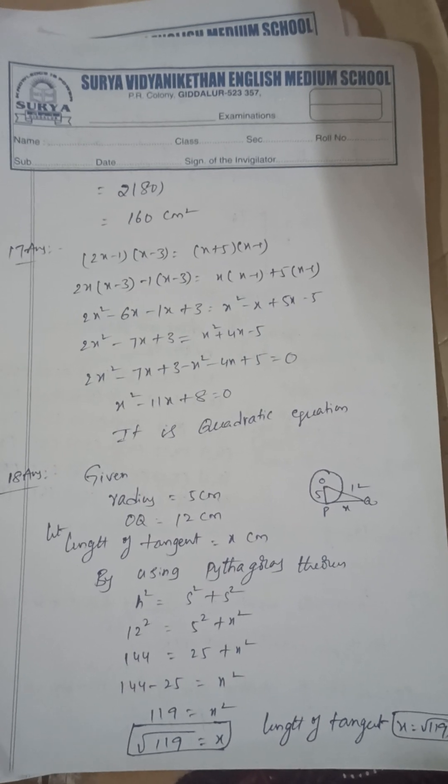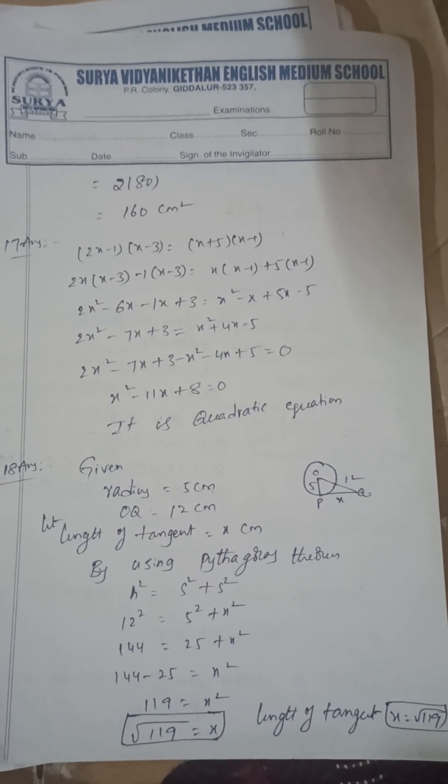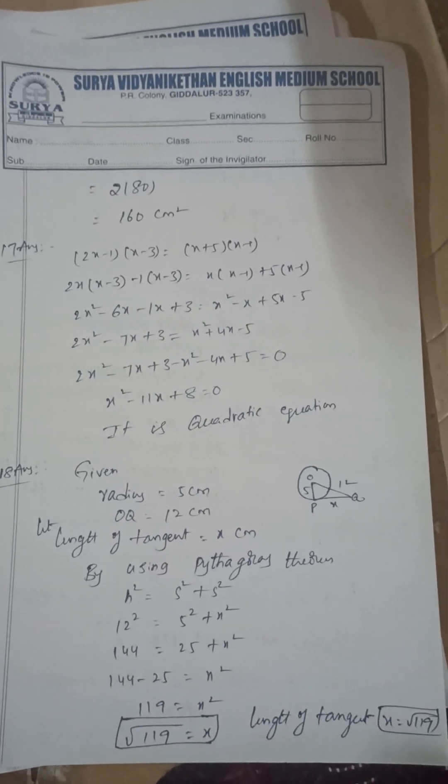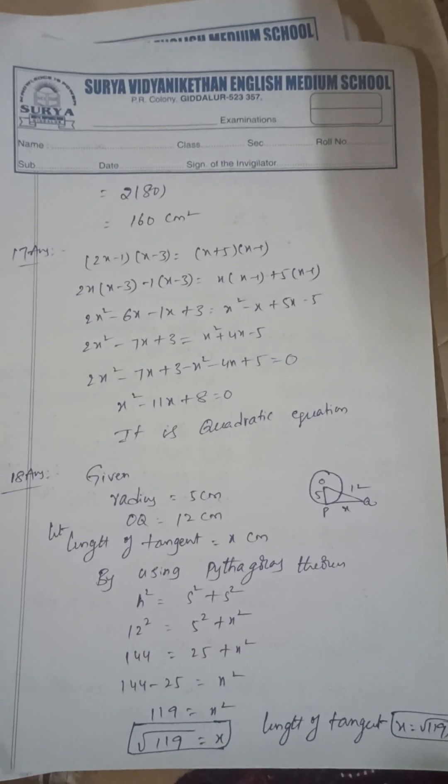Next, the radius is 5, the distance from a point on the tangent to the center is 12 cm. Find the length of the tangent. You can find by using Pythagoras theorem, so hypotenuse side square is equal to side square plus side square. The answer is square root of 119.